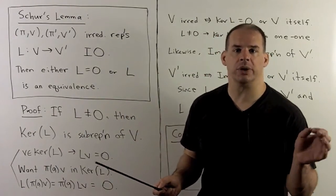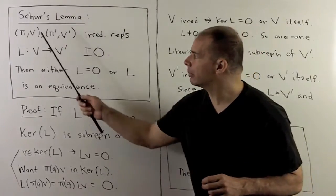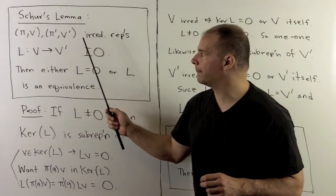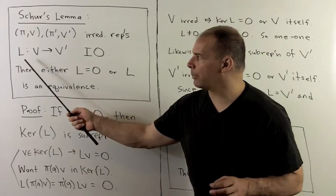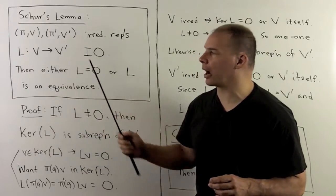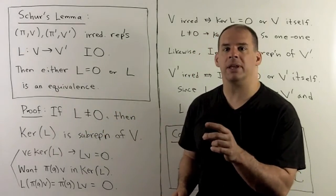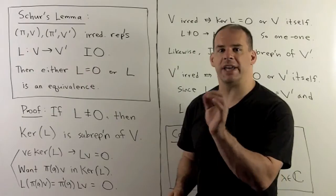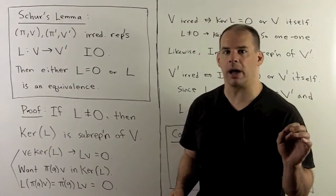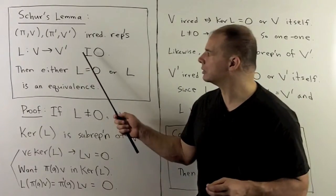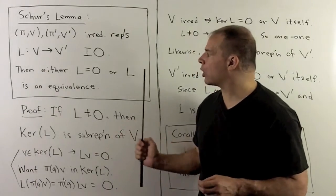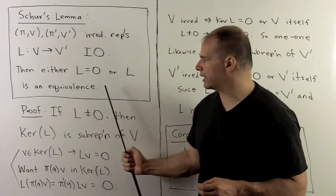Here we'll have two irreducible representations, pi V and pi prime V prime. We'll have an intertwining operator L carrying V to V prime, so L is linear and carries the G-action for V to the G-action for V prime. Then, either L is zero or L is an equivalence.